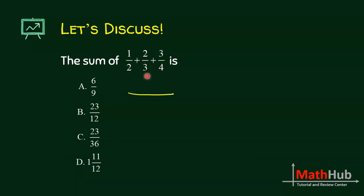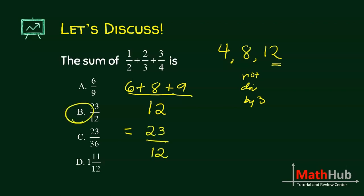What is the LCD of 2, 3, and 4? You get the biggest number and start with its multiple. First multiple of 4 is 4. Is 4 divisible by 2? Yes. But is 4 divisible by 3? No. For 8, it's not possible. But for 12, yes. So the LCD is 12. 12 divided by 2 is 6 plus 1 is 6. Plus 12 divided by 3 is 4 times 2, 8. Plus 12 divided by 4 is 3 times 3 is 3. That is 14 plus 9 is 23 over 12. The answer is letter B.